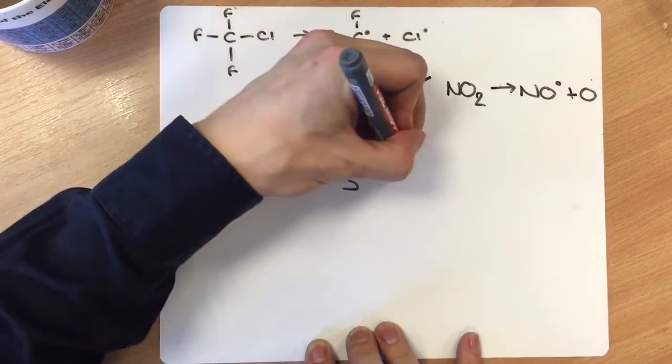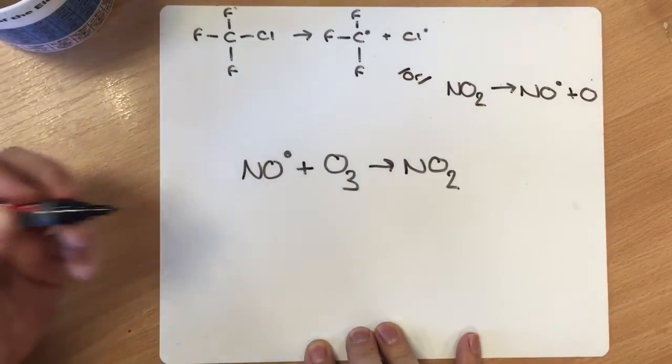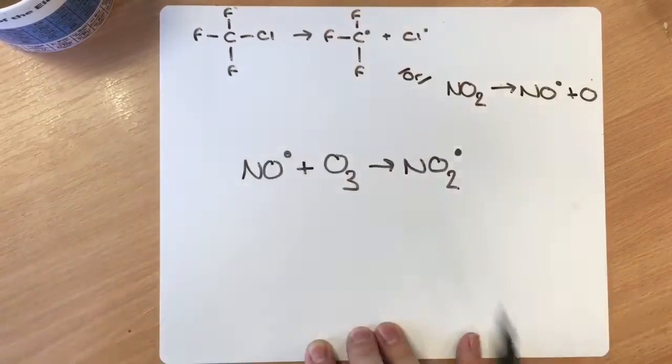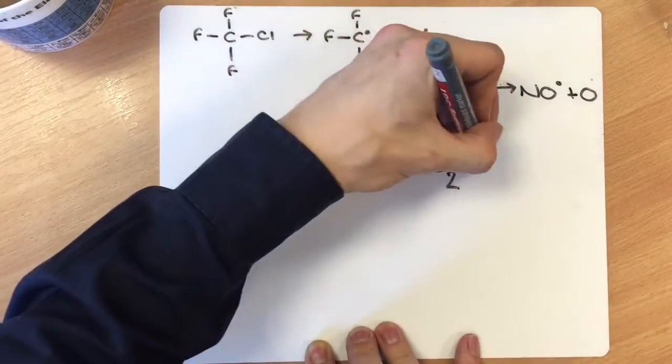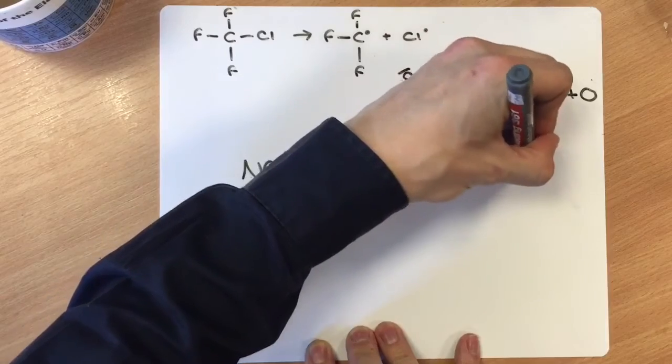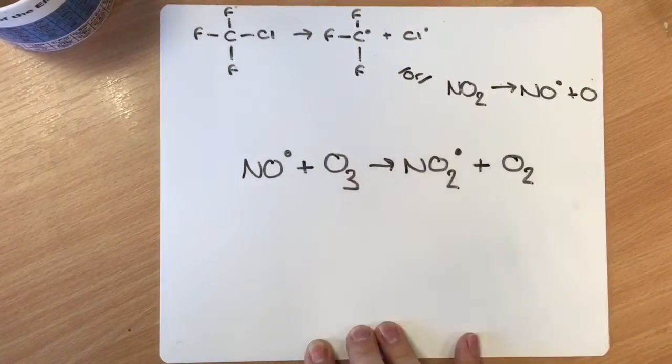This reacts to form something which ordinarily wouldn't look like a radical, but because of the circumstances in which it's formed, it is. It's a nitrogen dioxide radical. What you also form is some admittedly very friendly looking oxygen, but obviously it's come as a consequence of losing some O3.